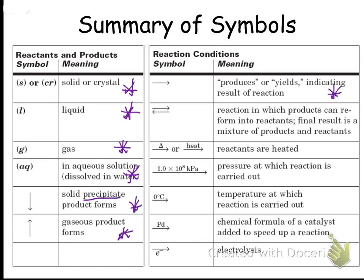This arrow - we'll get into equilibrium later where we have a double arrow. Delta, or the word heat, means that we added heat. We won't talk much about pressure. Something over the equation, a temperature over the equation, tells us what temperature it is at. And we're not really going to talk too much about catalysts. But if you saw an element over the arrow, it means it's a catalyst, and then electrolysis, which we will not talk about much.